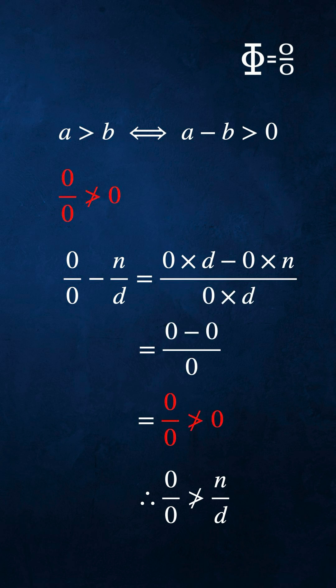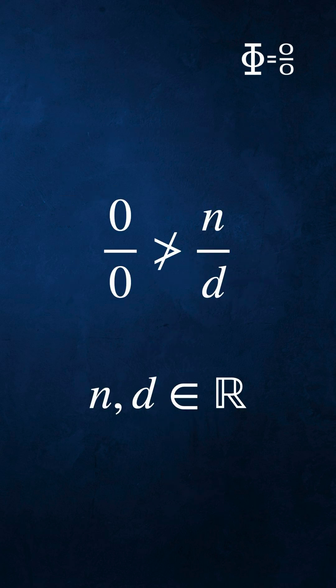We know from the theorem that 0 over 0 is not greater than 0. So now we've proved that 0 over 0 minus n over d is not greater than 0. Therefore, 0 over 0 is not greater than any fraction with real numerator n and real denominator d.